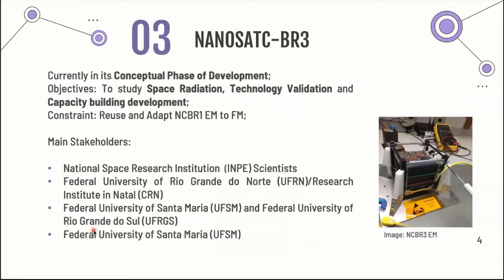The Nanosat CBR 3 is in its conceptual phase of development, this being the first phase of the lifecycle. Its objective is to study space radiation, technology validation, and capacity building development. Unlike the previous missions, the Nanosat CBR 3 has a constraint: to reuse and adapt the Nanosat CBR 1 engineering module, a full one-unit platform, to a modified module. By having this constraint, time and production cost will reduce significantly. Today it has four main stakeholders, but since it's still in its beginning, stakeholder analysis hasn't been completed yet.